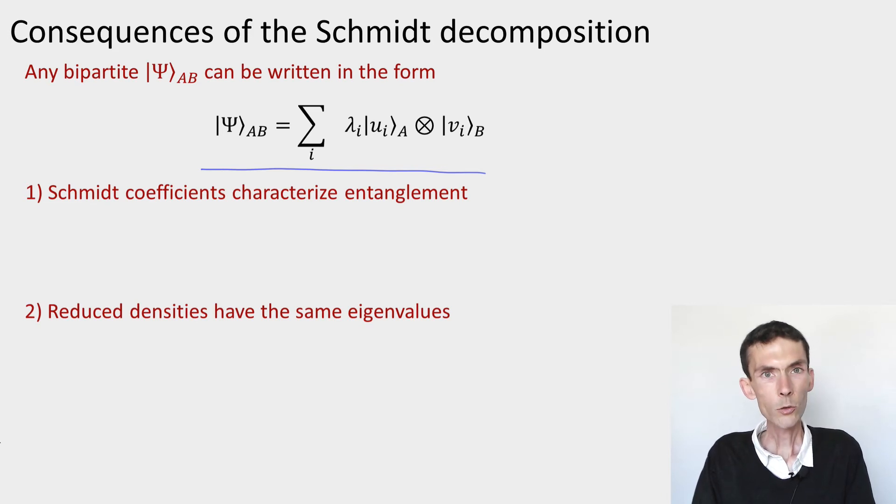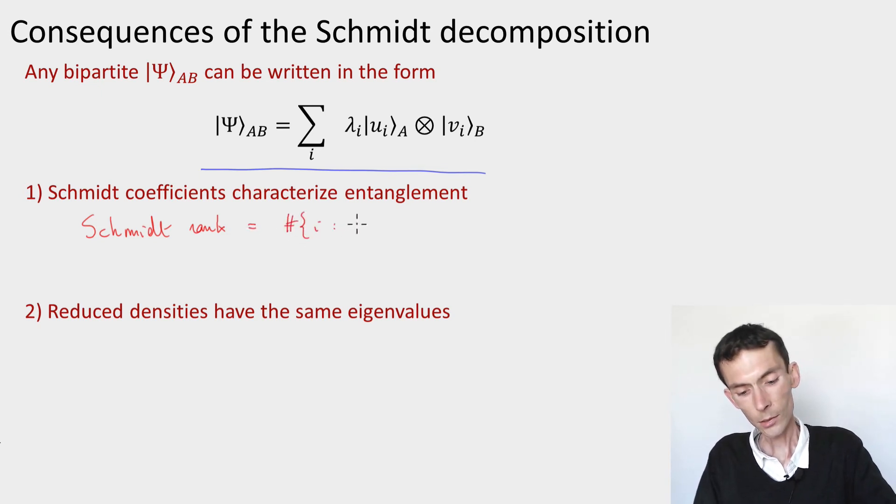So associated to the Schmidt decomposition, there's a number that's called the Schmidt rank. And the Schmidt rank is simply defined as the rank of this decomposition, which is the number of indices i such that the coefficient lambda i is not zero. And so if the Schmidt rank of a state is equal to one, it means there's only one term in this decomposition. The state is a product state.